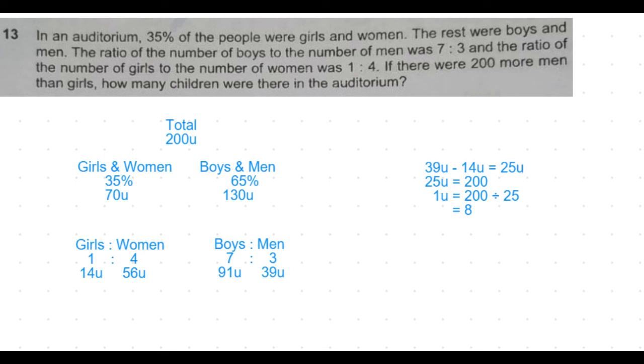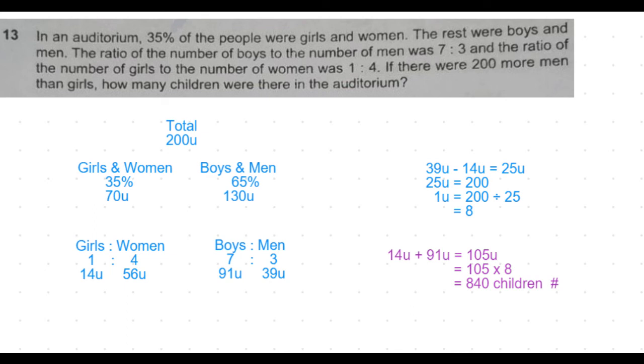The question is how many children were there in the auditorium. The girls were 14 units and the boys were 91 units. That's a total of 105 units, which is 105 times 8 equals 840 children. That's the answer to this question.